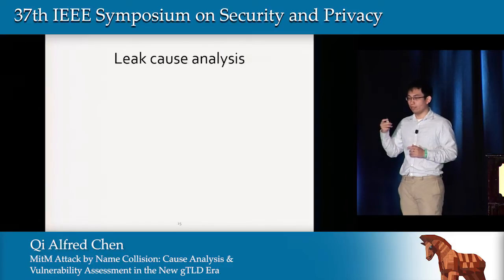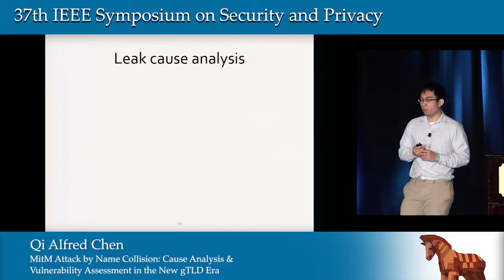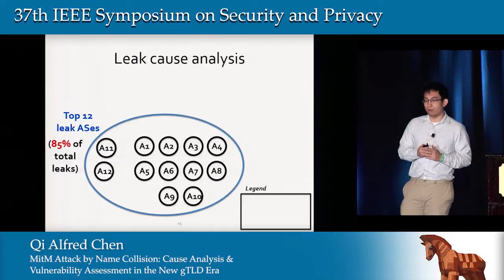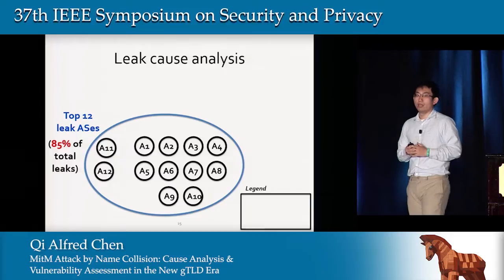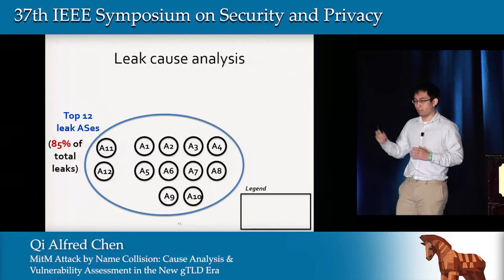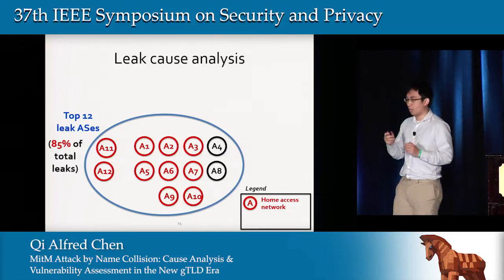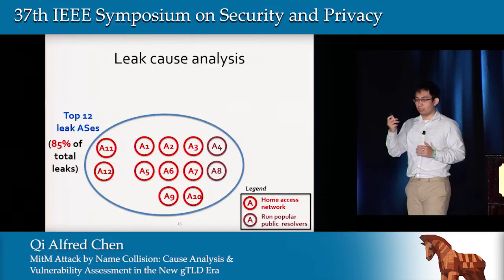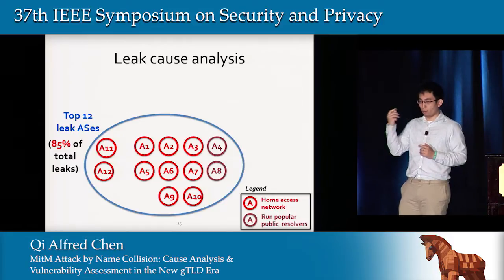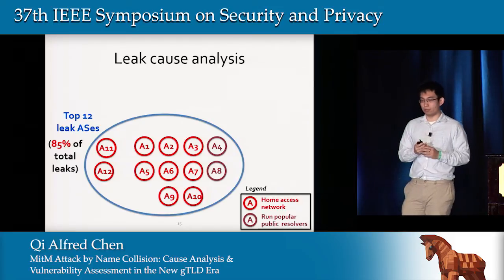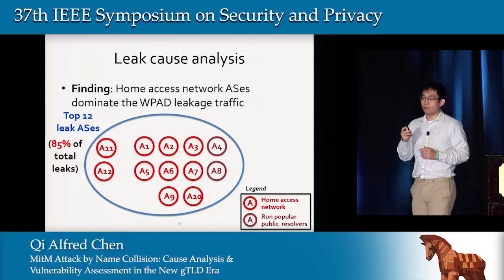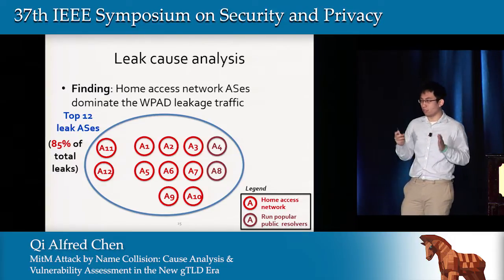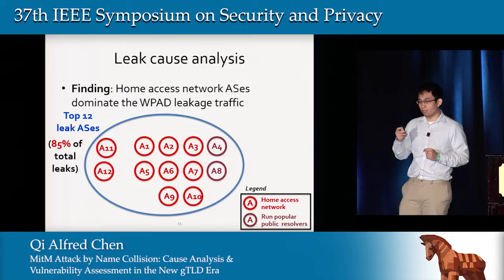Let's explore why the leakage happens. We measured where it comes from — these are the top 12 high-leakage ASes, which together account for around 85% of total WPAD query leakage in the wild. Surprisingly, 10 of them are well-known home access network ASes. The other two run open resolvers in public IP space, also commonly configured by home users. This shows that home access network ASes are the dominant source of leakage, and the underlying cause is likely related to user behavior at home.